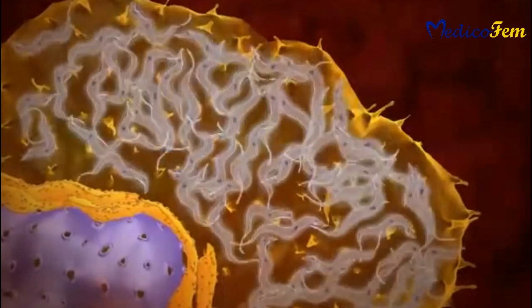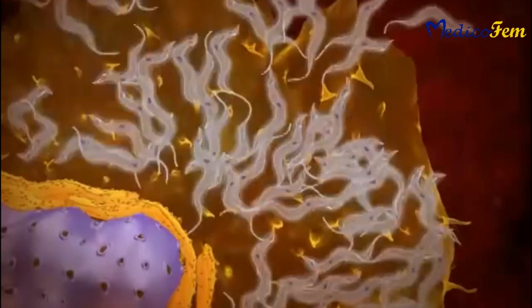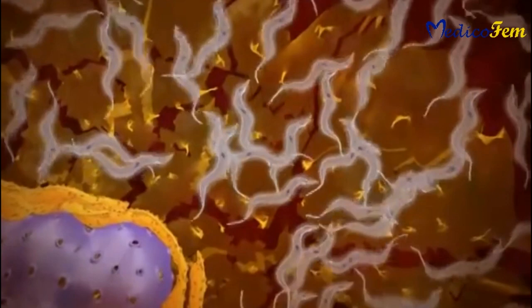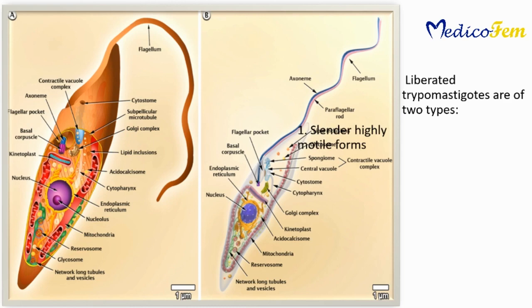On rupture of the pseudocyst, trypomastigotes are liberated into the blood. The liberated trypomastigotes are of two types: slender highly motile forms, and broader less motile forms.